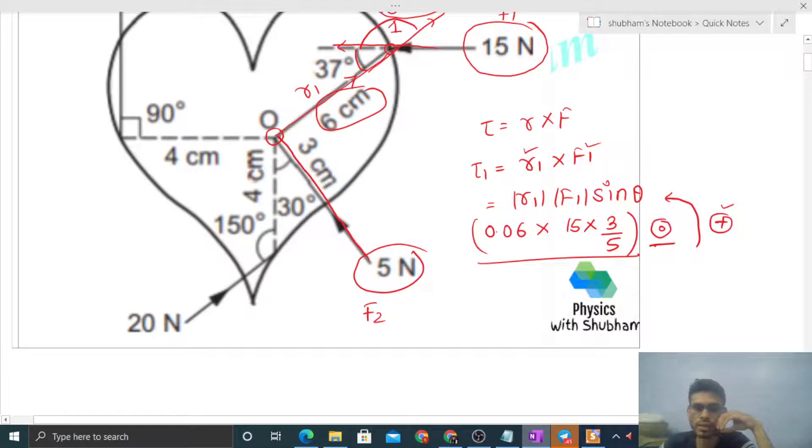You can see this force directly passes through the point about which we're calculating torque. So if a force passes through the point, then torque will be zero. Or if you use R cross F, it will be zero because the angle between R and F is 0 or 180.